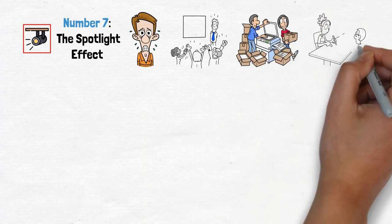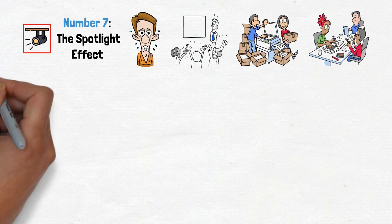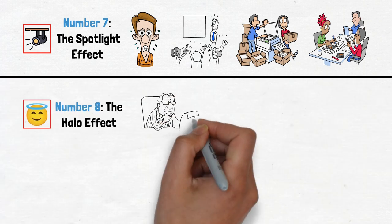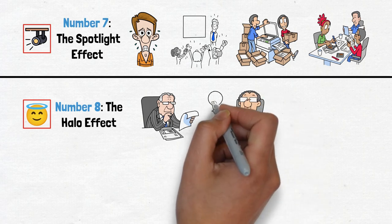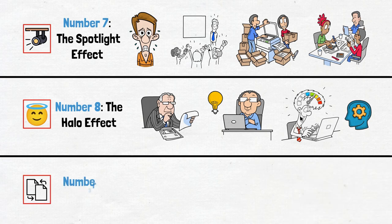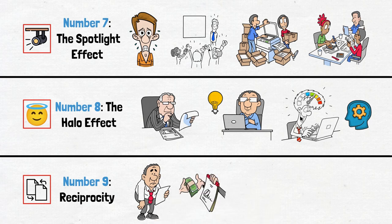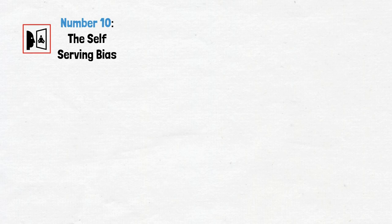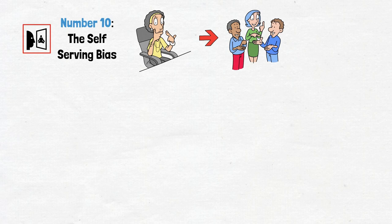Number eight, the halo effect. First impressions matter, but don't let them cloud your judgment. Look beyond the surface and judge each situation on its own merits. Number nine, reciprocity. Ever felt obligated to return a favor? That's reciprocity at play. Recognize when you're acting out of obligation and when it's genuine desire. Number 10, the self-serving bias. It's time to take responsibility for our actions, both the good and the bad.